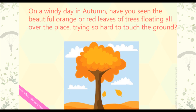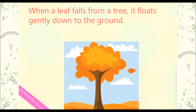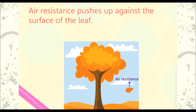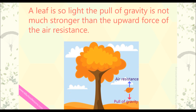On a windy day in autumn, have you seen the beautiful orange or red leaves of trees floating all over the place, trying so hard to touch the ground? When a leaf falls from a tree, it floats gently down to the ground. Air resistance pushes up against the surface of the leaf. A leaf is so light, the pull of gravity is not much stronger than the upwards force of the air resistance.